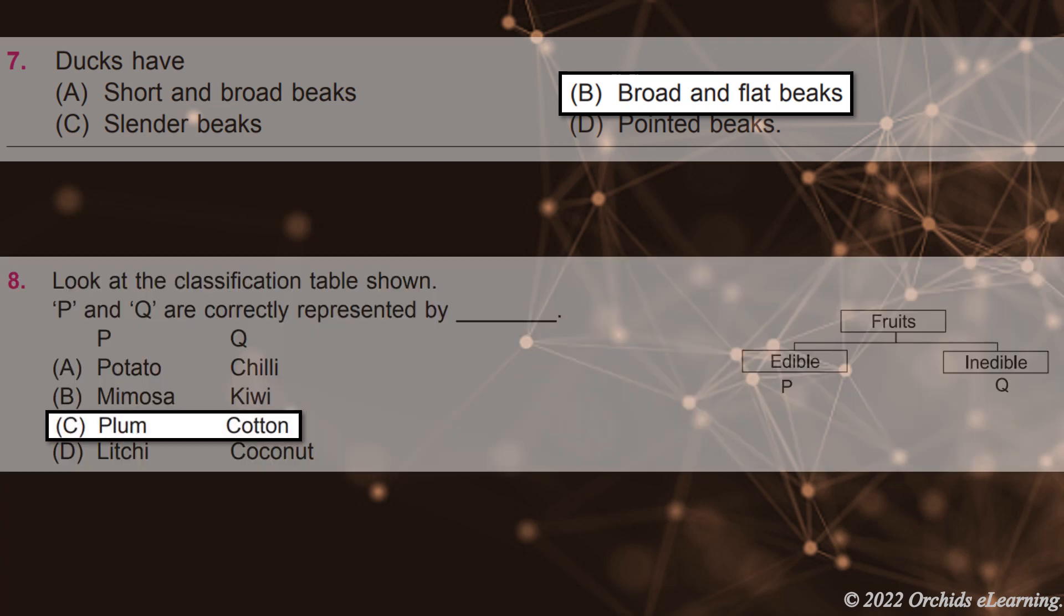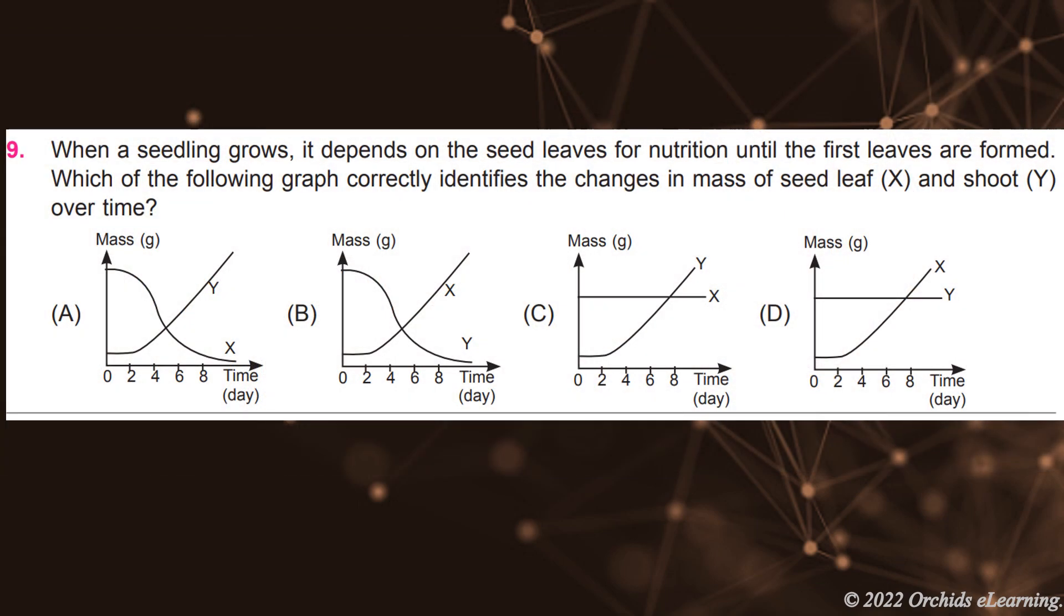Plum cotton. When a seedling grows, it depends on the seed leaves for nutrition until the first leaves are formed. Which of the following graph correctly identifies the changes in mass of seed leaf and shoot over time? D. A.